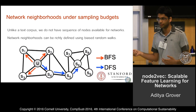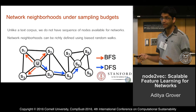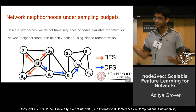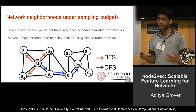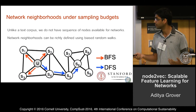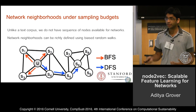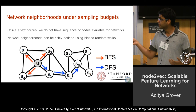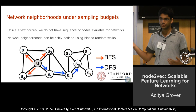Or I could take the other extreme in which I do a depth-first search, always traversing nodes that are at an additional hop from node U. It turns out that both these paradigms are important for networks. In the case of the BFS strategy, you can characterize the communities well — the communities to which node U belongs. Whereas in the case of DFS, you can explore farther off in the network, discovering nodes such as S6, which is structurally equivalent to node U.